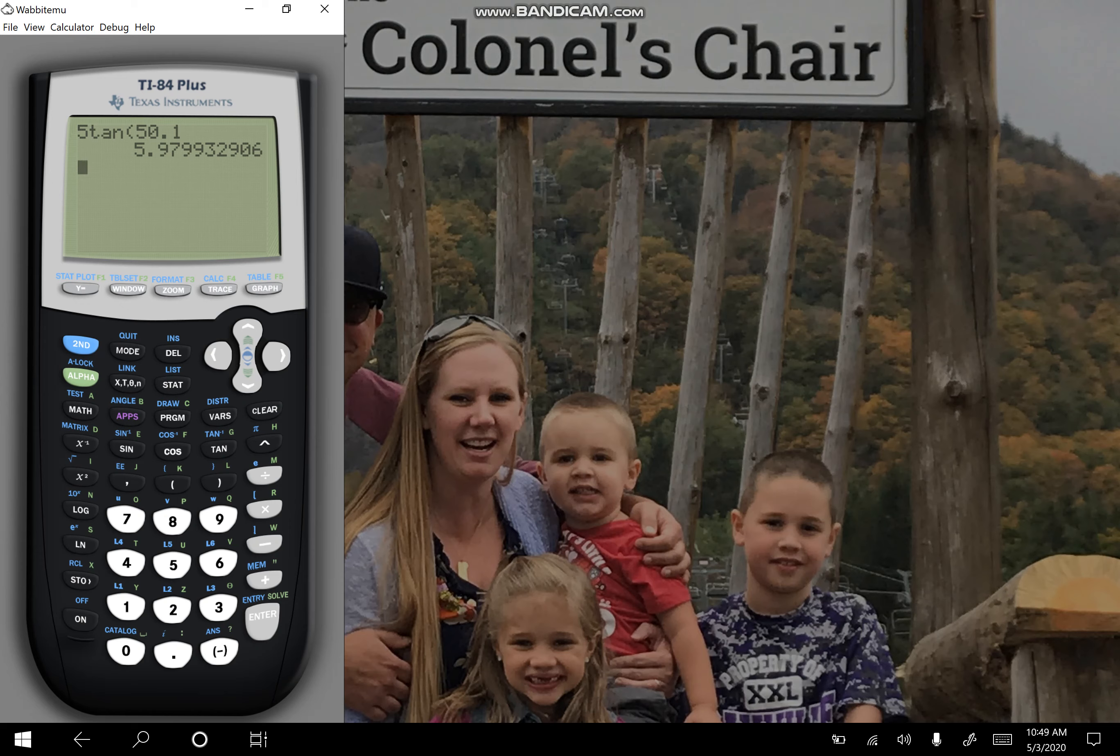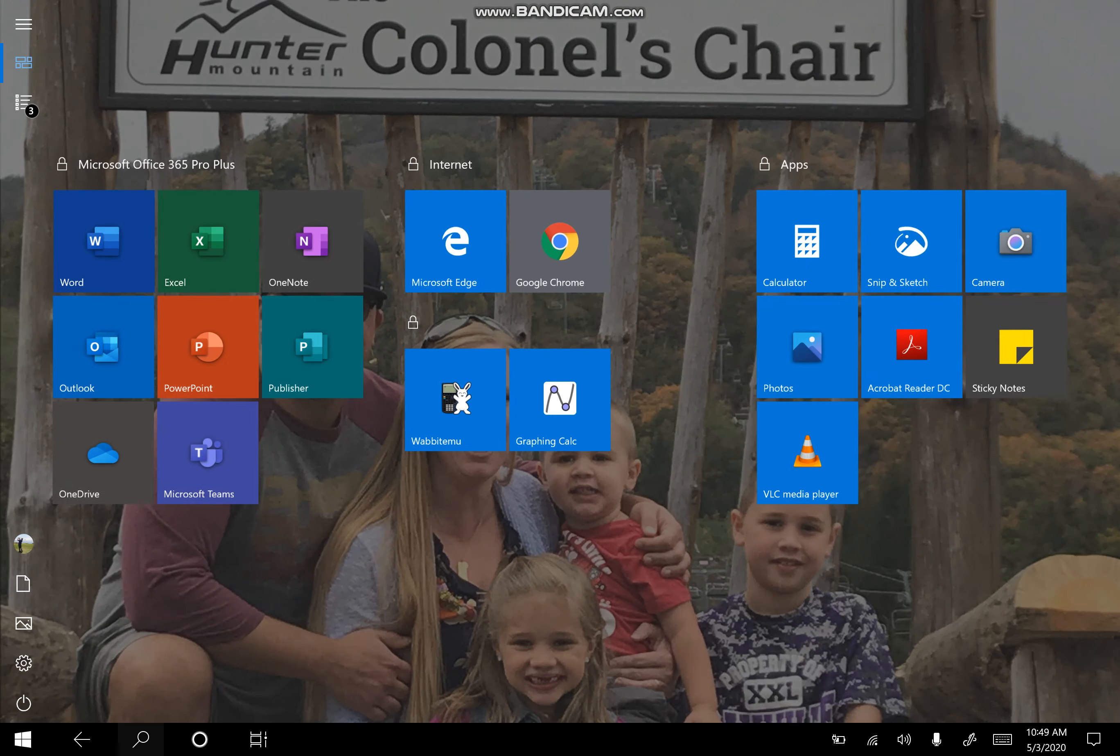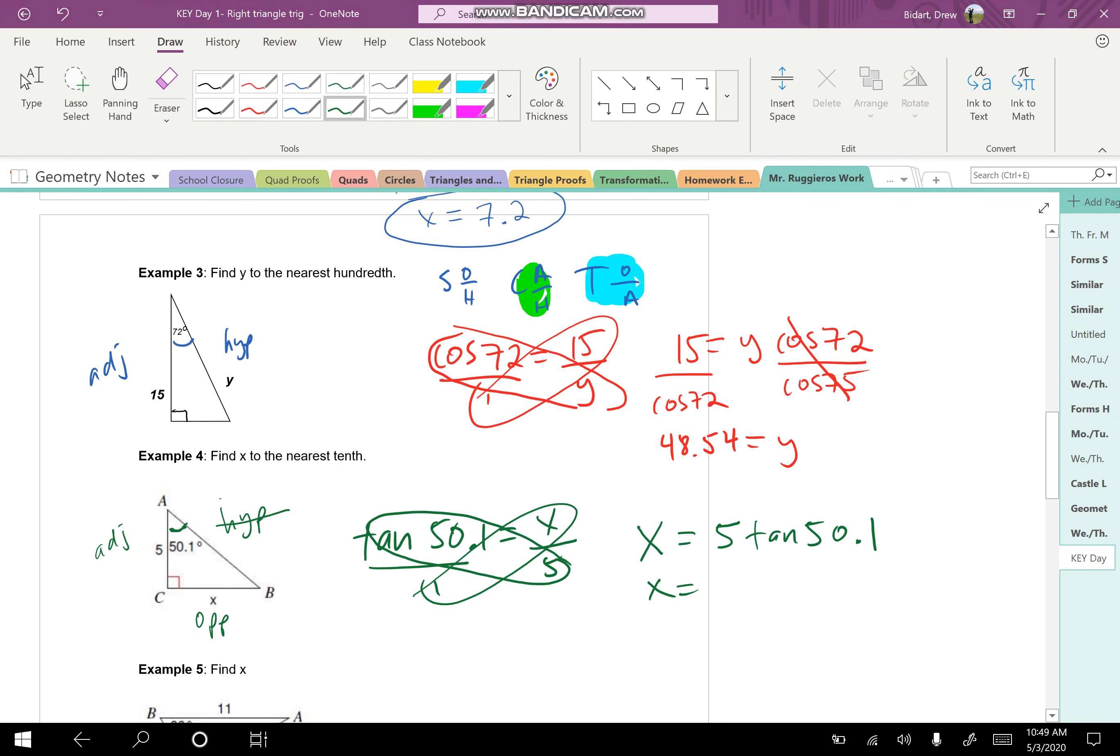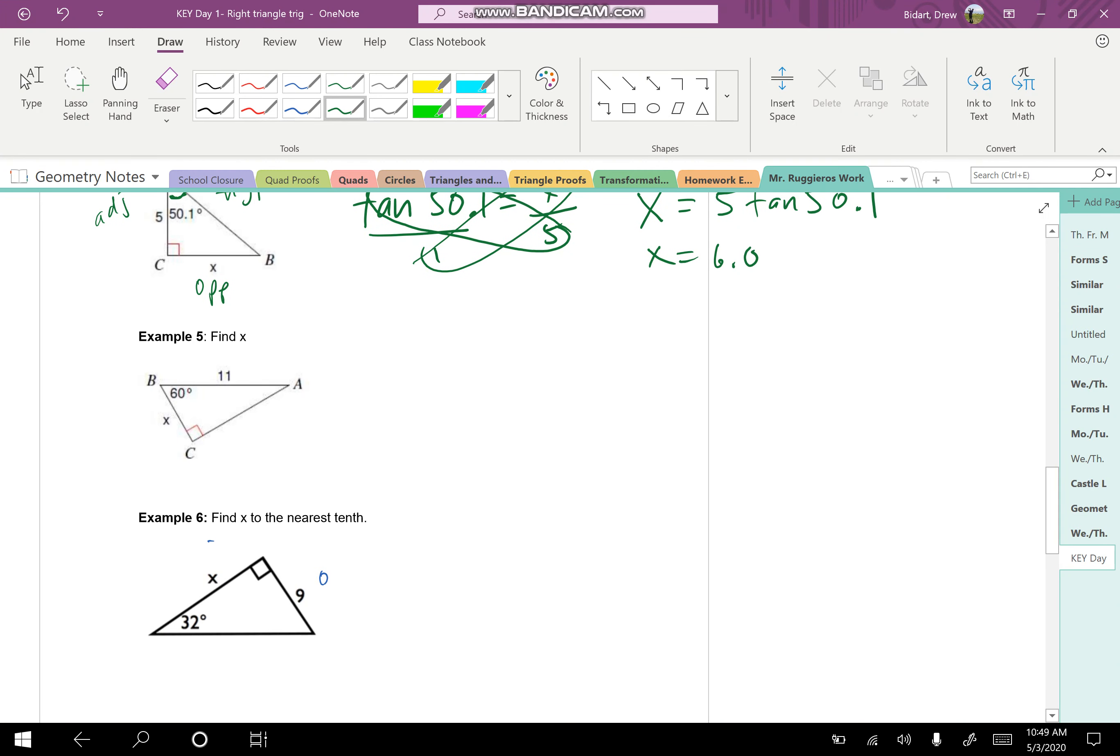Now, this is an interesting one. It does say nearest tenth. So if I look at that value, the 7 here bumps up the 9, and the 9 is going to bump the 5. So this actually ends up being to the nearest tenth. This is going to be 6.0. So x is going to be 6.0.